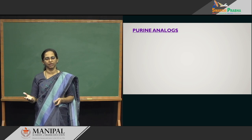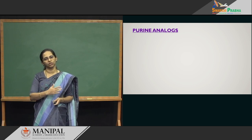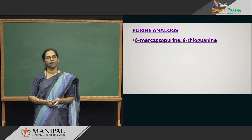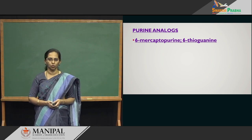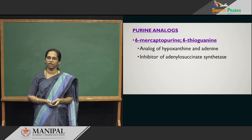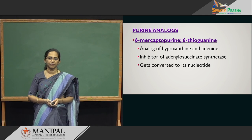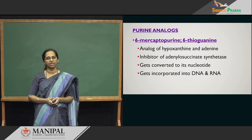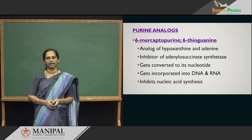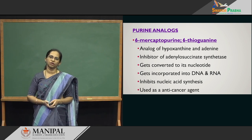Purine analogues include 6-mercaptopurine and 6-thioguanine. They are analogues of purines and block the enzyme adenylosuccinate synthetase. As a result, you do not have nucleotides, DNA, or RNA produced — they block nucleic acid synthesis and are therefore anti-cancer agents.